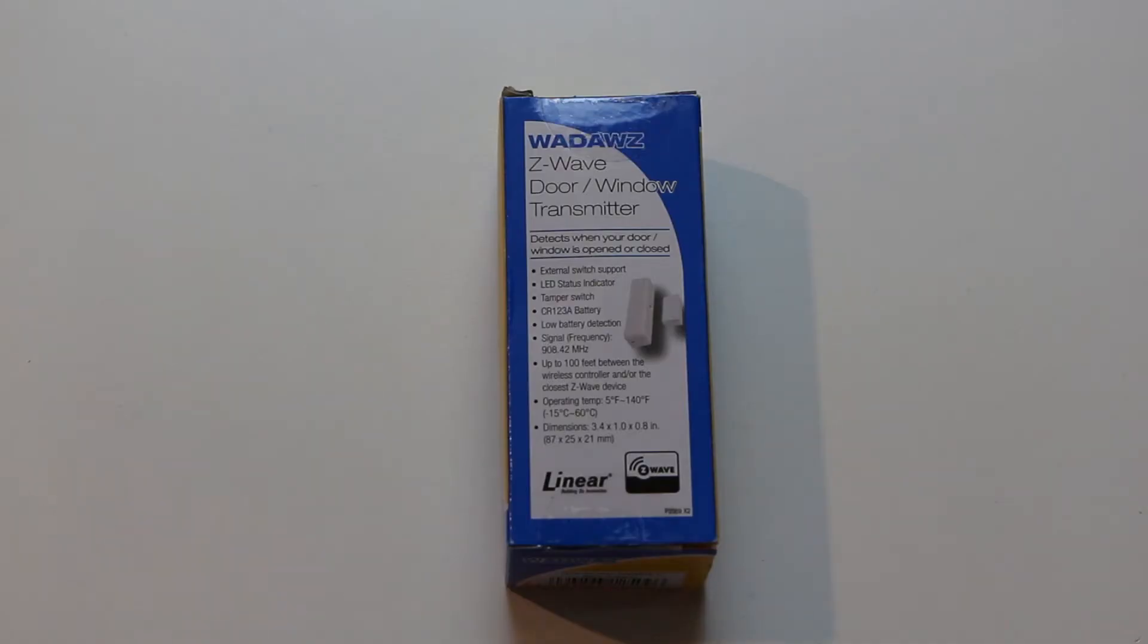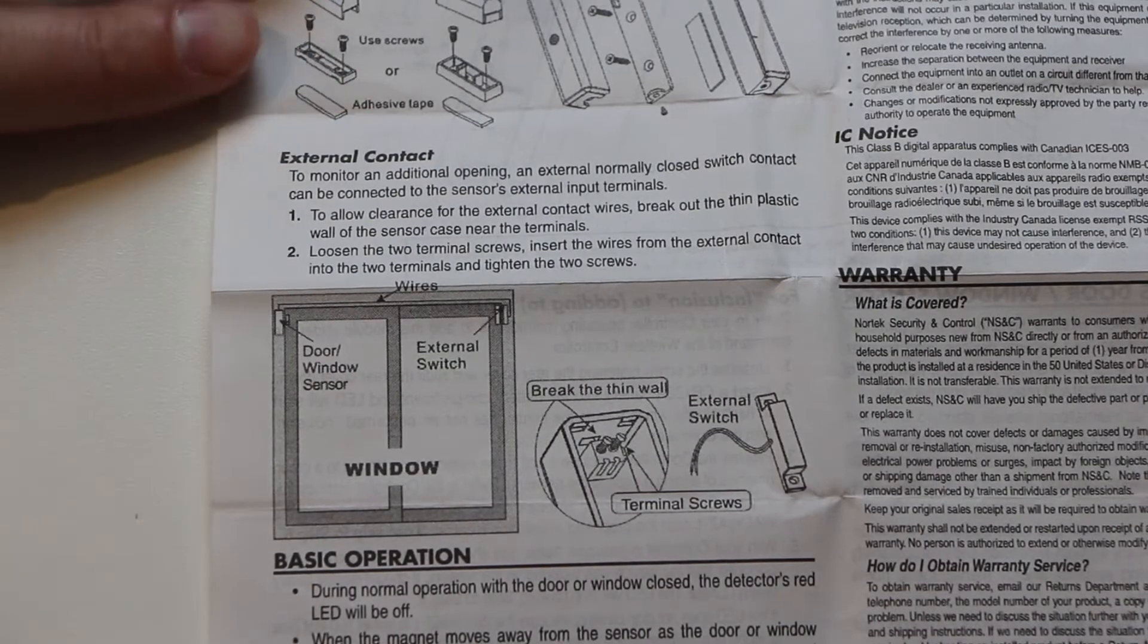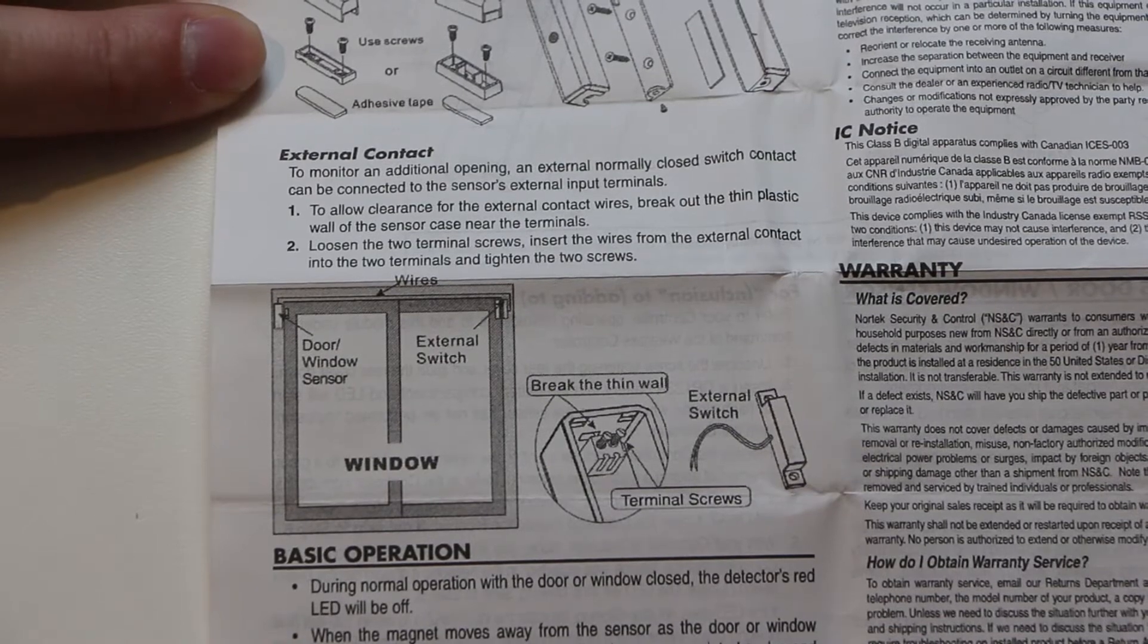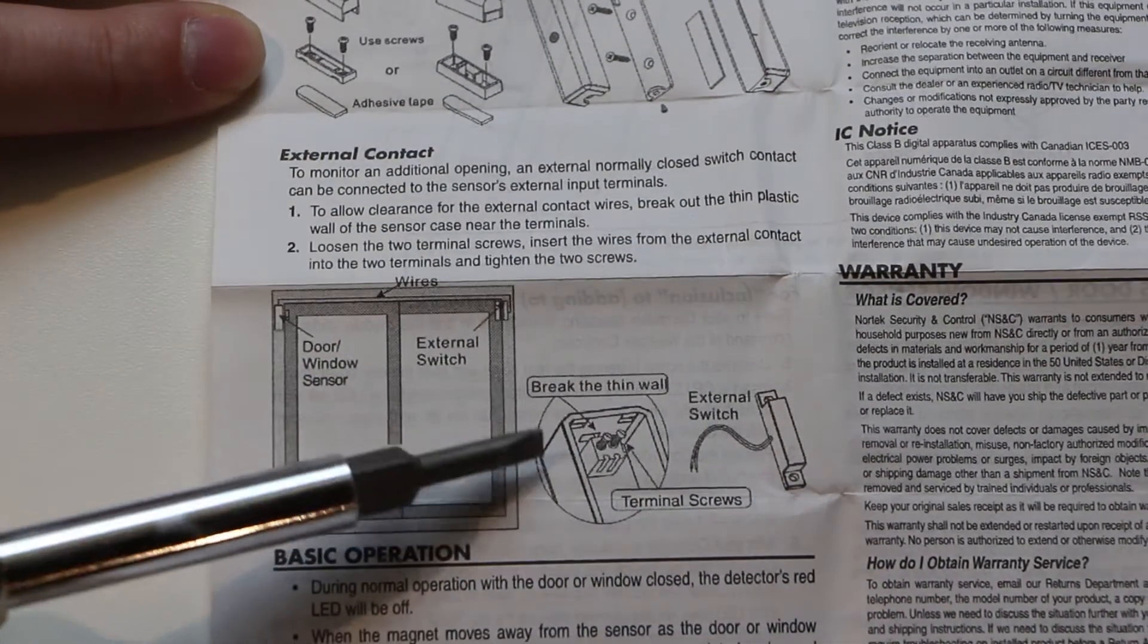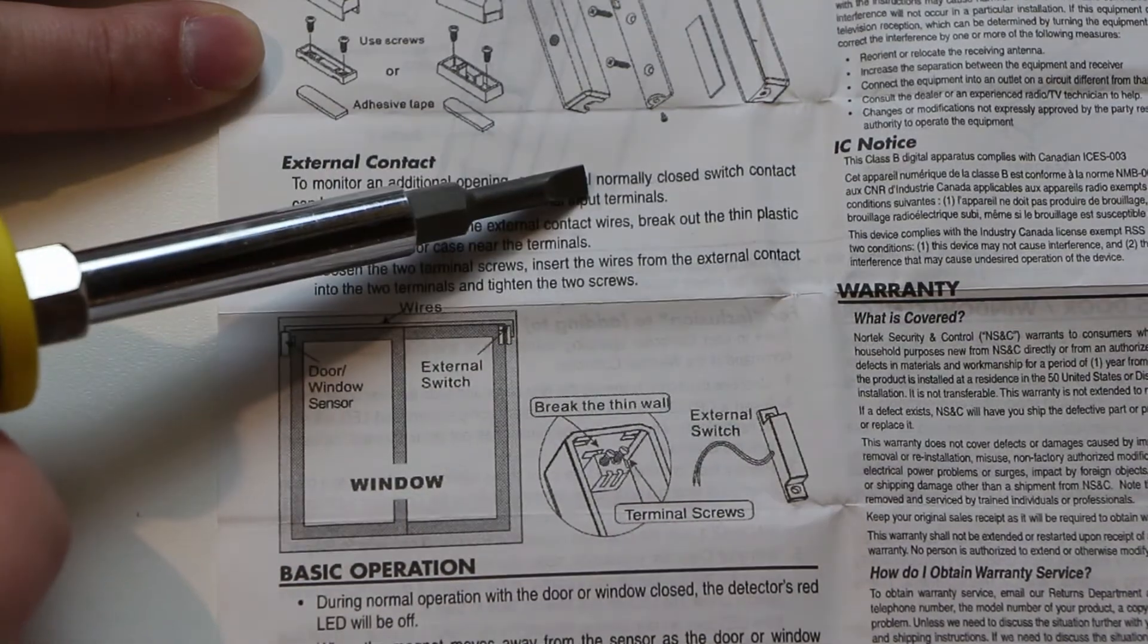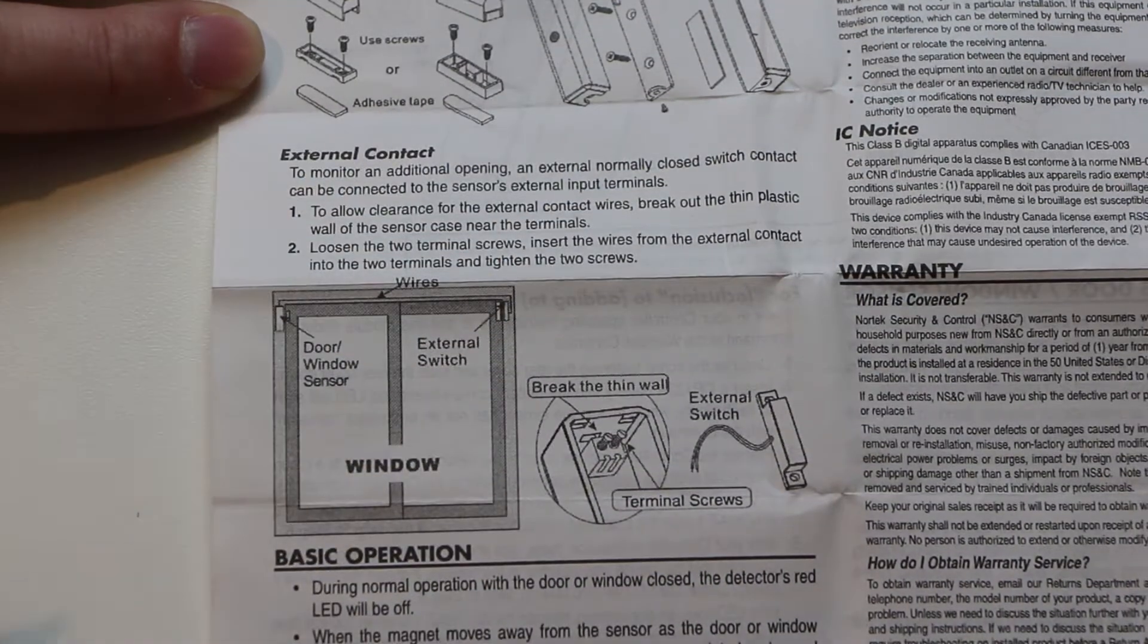Next I've got a Z-Wave door and window sensor. Pull this guy out. Pull out the manual. It looks like the important bits are the screw terminals inside for the external contact and normally closed switch, that's the parts we need to know.